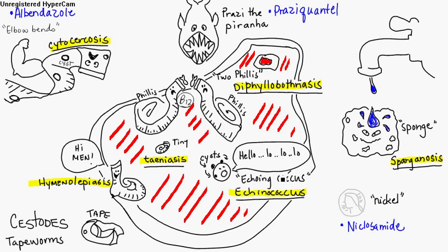Echinococcus — they've got really big cysts. It causes hydatid disease and large cysts.